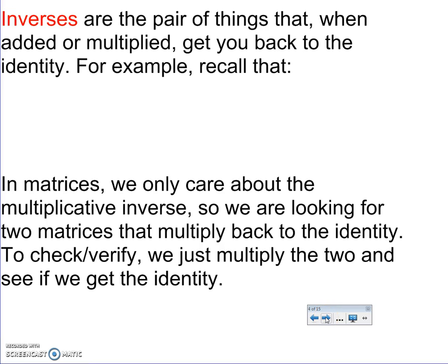So inverses are the pair of things that, when added or multiplied together, get you back to the identity. For example, 5 plus negative 5 gives you the additive identity of 0, or 2/5 times 5/2 gives you the multiplicative identity of 1. In matrices, we only care about the multiplicative inverse. So we are looking for two matrices that multiply back to the identity. And to check or verify, we just multiply the two and see if we get the identity.